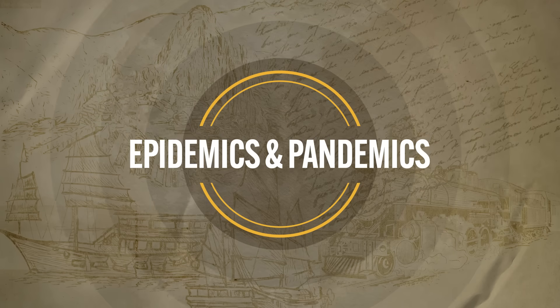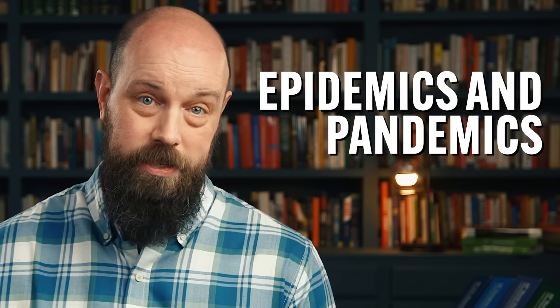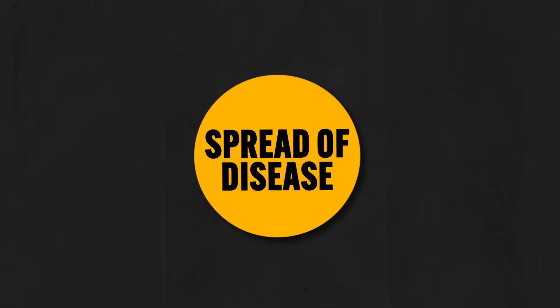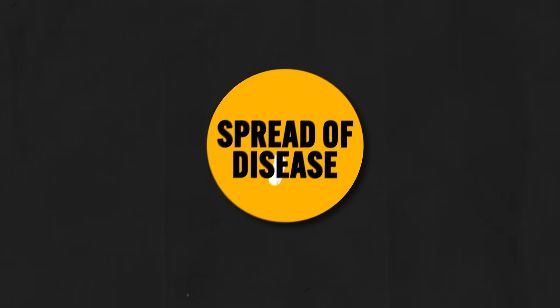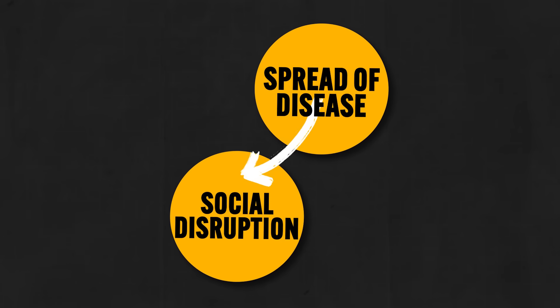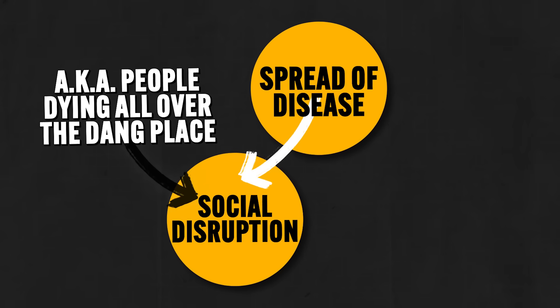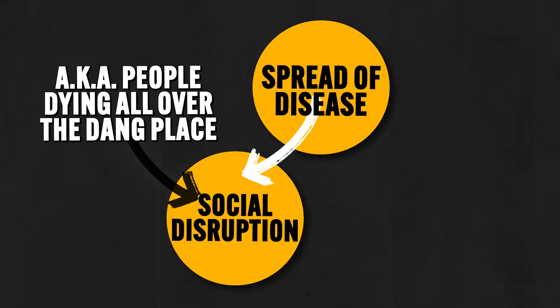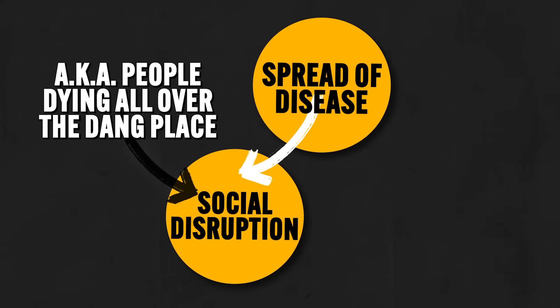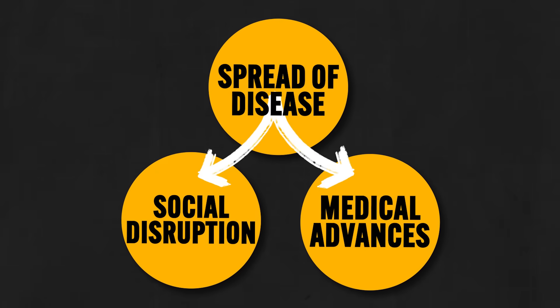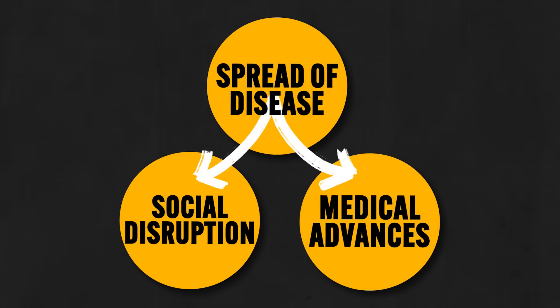The second big category of disease after 1900 we need to consider is epidemics and pandemics. You need to remember two very important things about them: first, the spread of diseases caused no small amount of social disruption — people were dying all over the place and that caused an awful lot of problems. And second, the crisis caused by these diseases often led to new technological and medical advances.